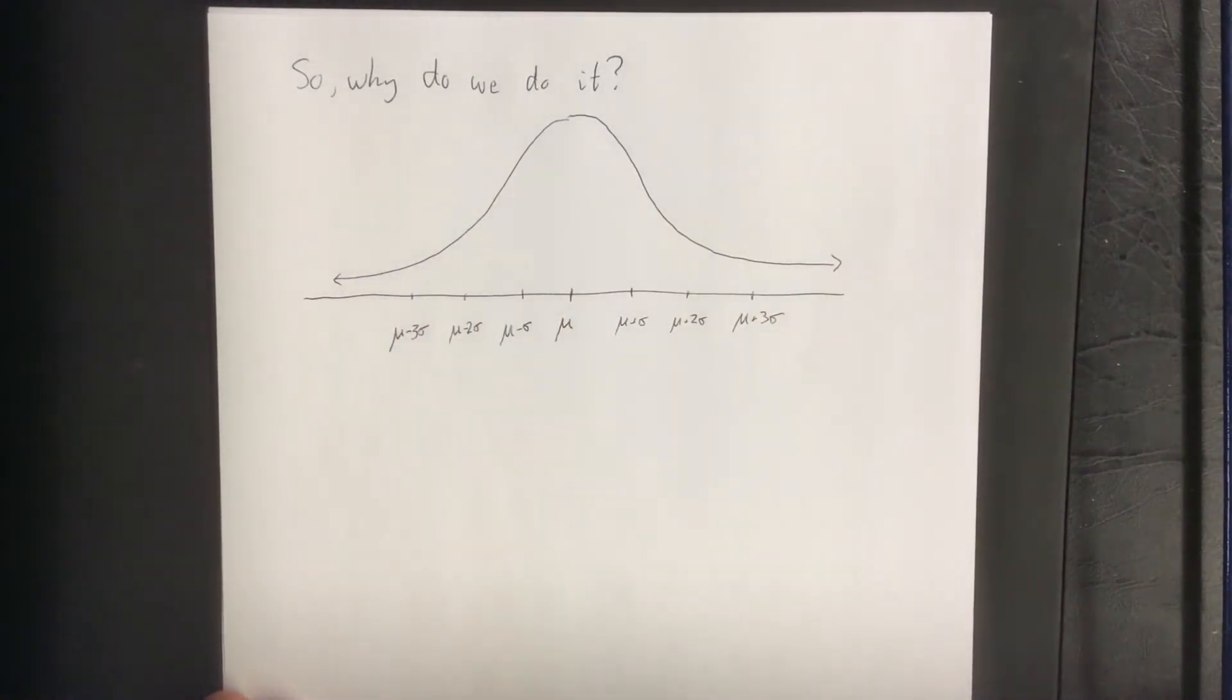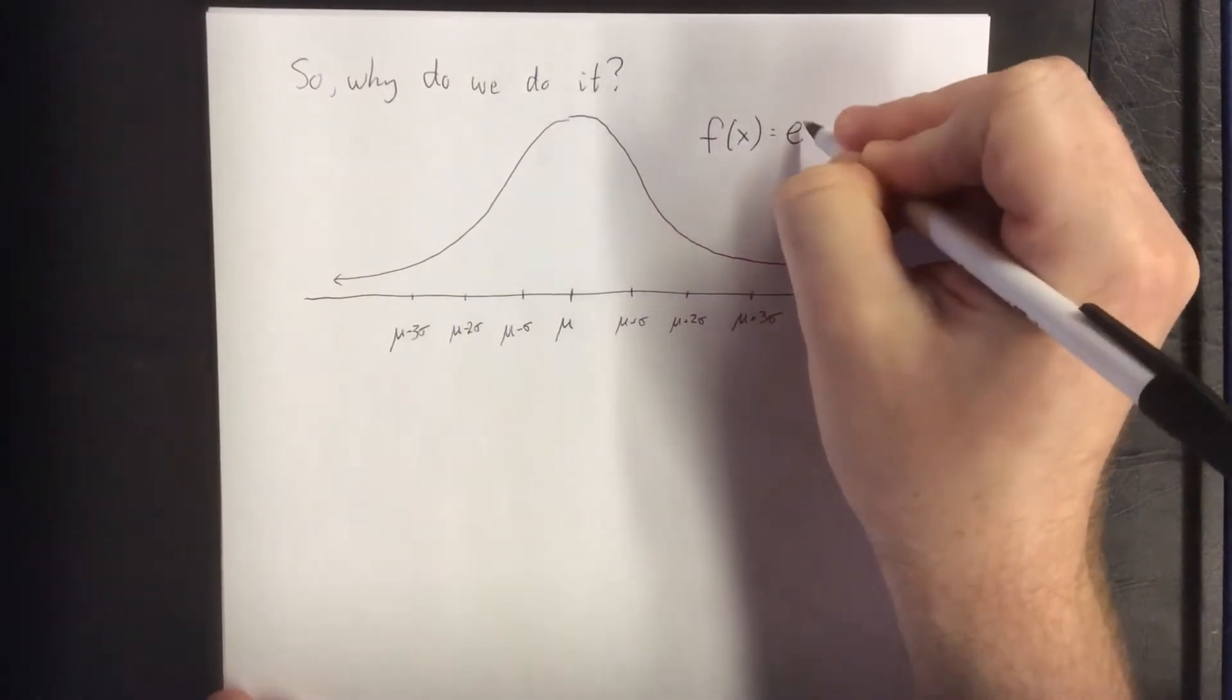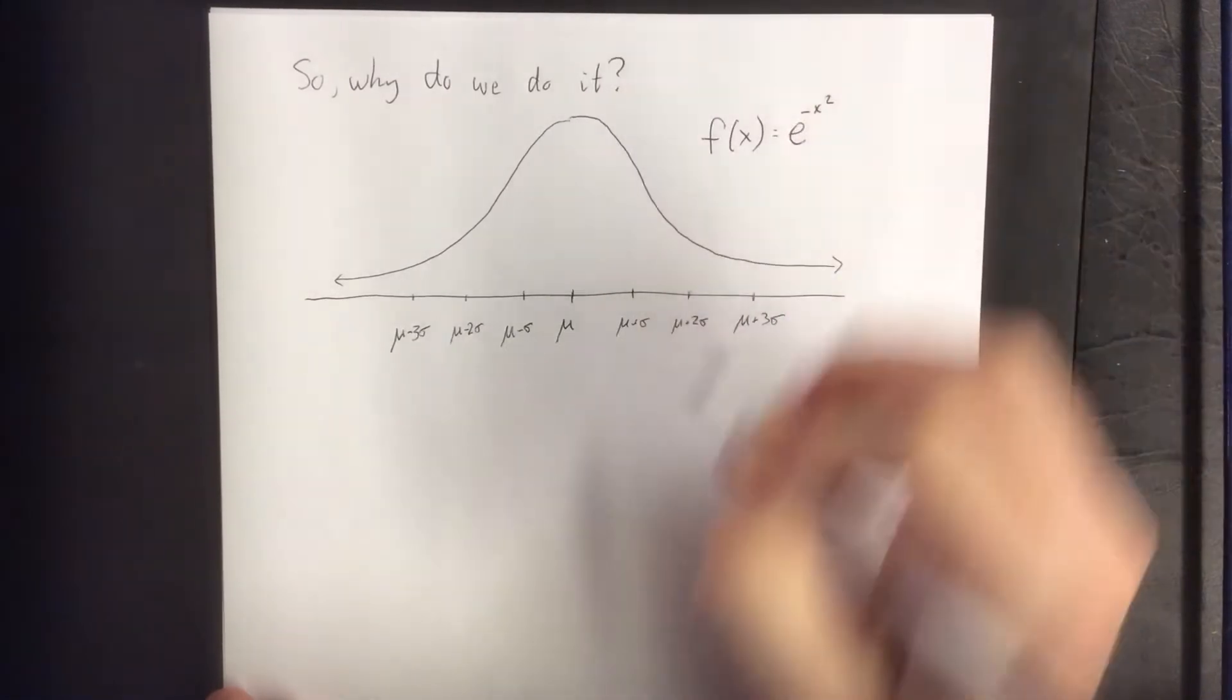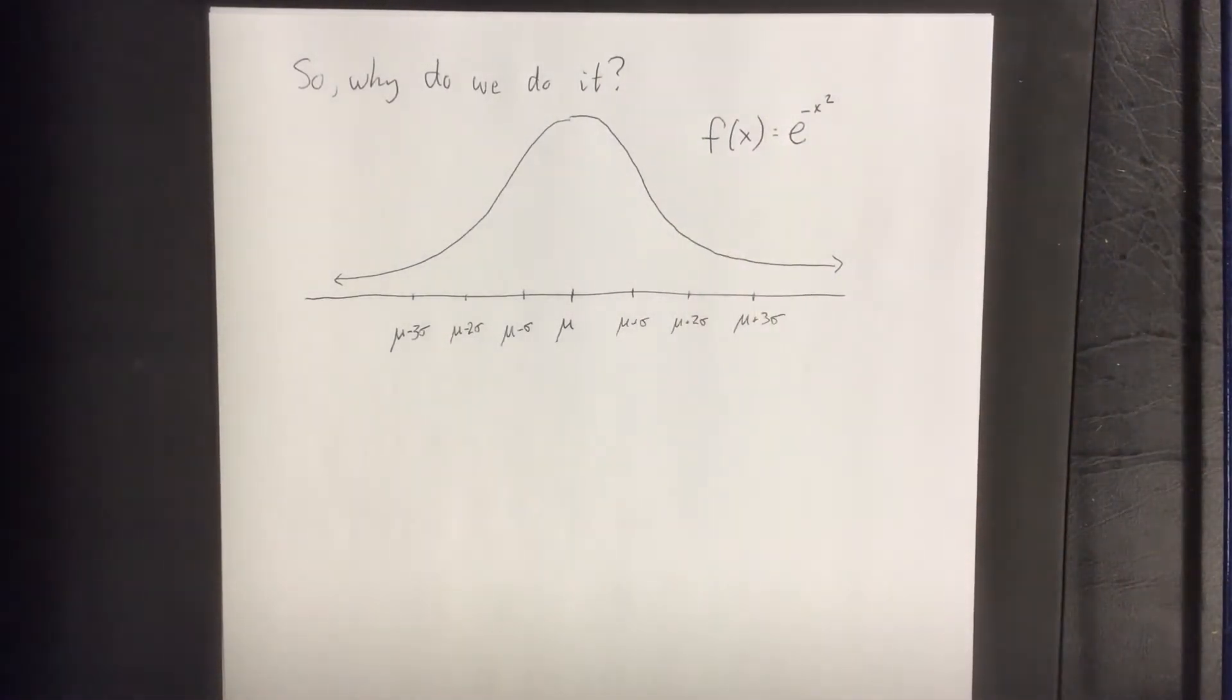To find the probability that something is expected or not relates to the following function. There's a little bit more to it than that, but this is the baseline function that they use for the normal distribution.